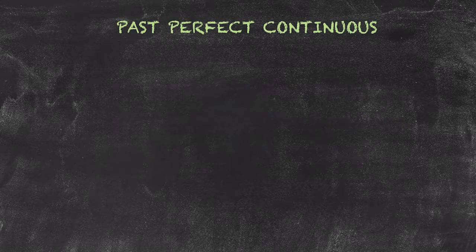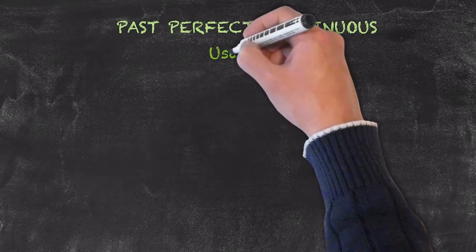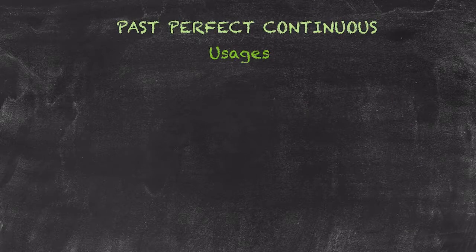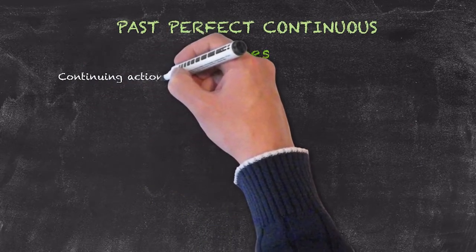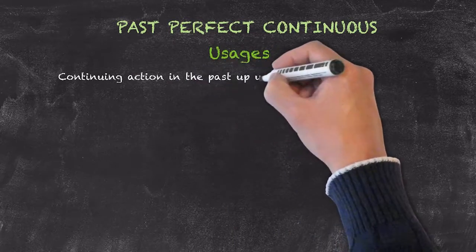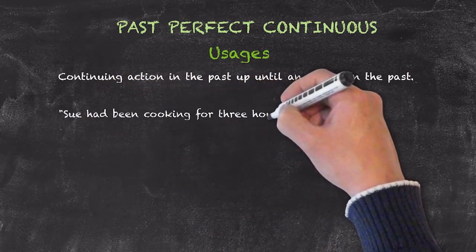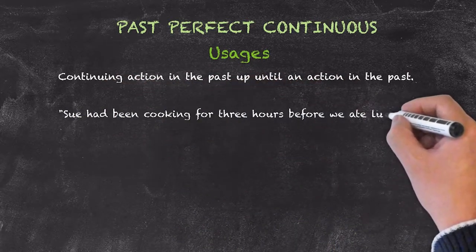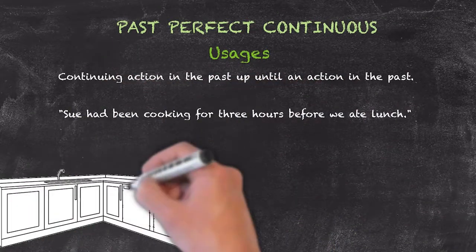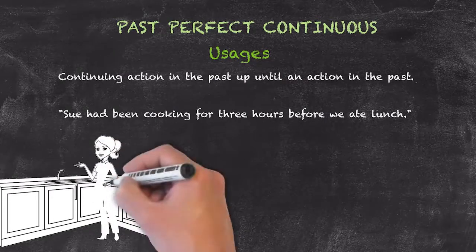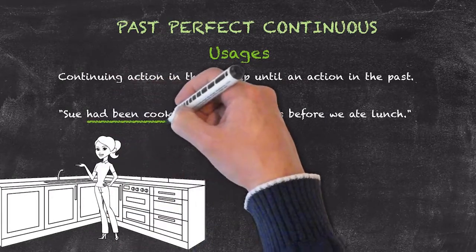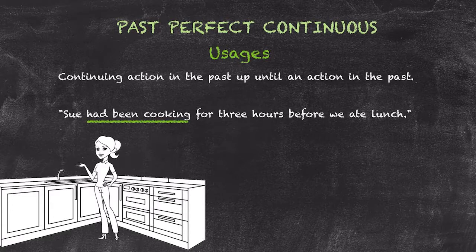And now the usage for the past perfect continuous tense. It is as follows. Using it to communicate a continuing action in the past, up until an additional action in the past. Here we have, Sue had been cooking for three hours before we ate lunch. The action that had been occurring up until that point was, Sue had been cooking for three hours. Before the other action, we ate lunch.